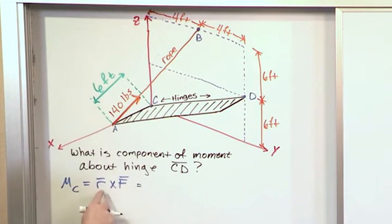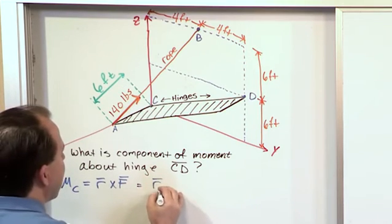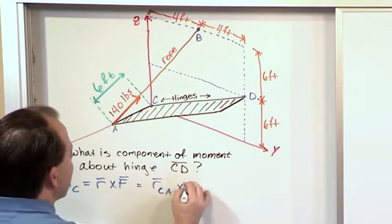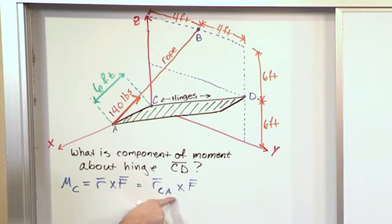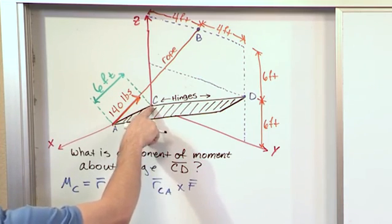So to make it a little easier to understand I'm going to denote this R vector RCA cross F. The reason I'm denoting it RCA is because the vector starts at C, it ends at A.